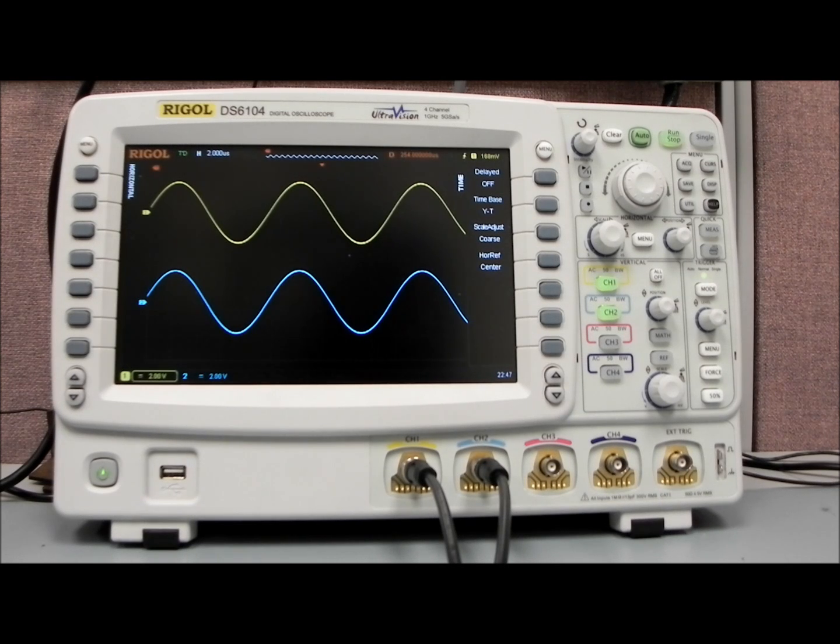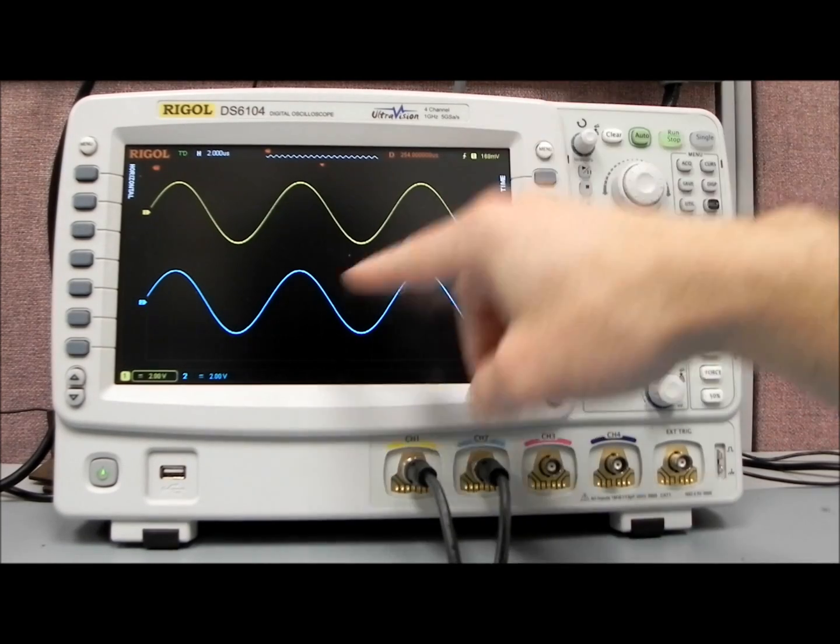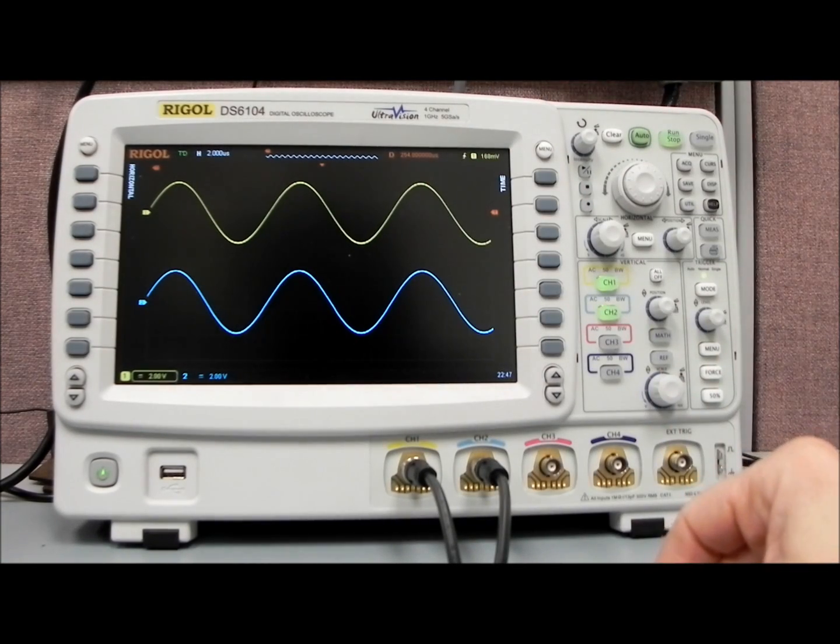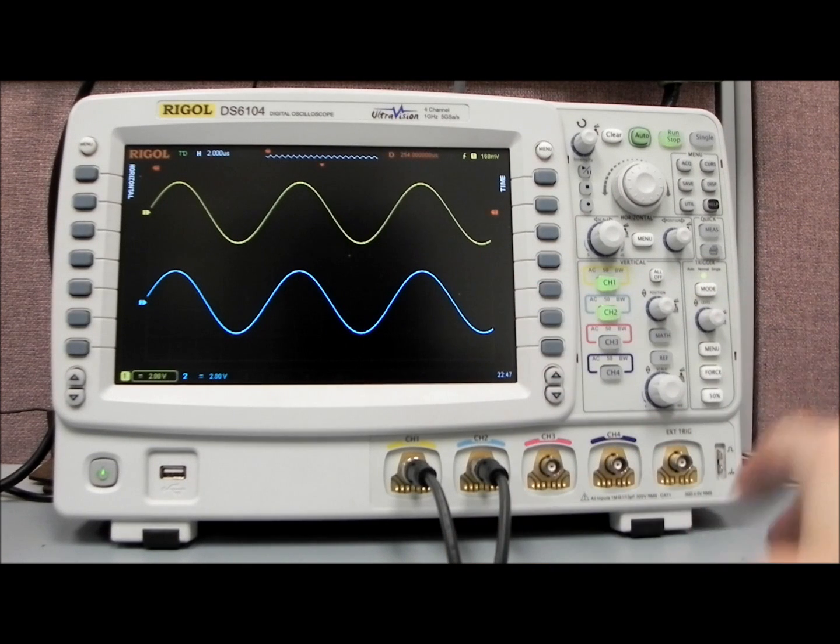In order to do that, I have a function generator with two signals coming in. These are 100 kilohertz sine waves and I have them in phase as you can see. One way, if you're analyzing waveforms that are similar,